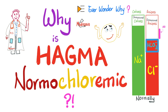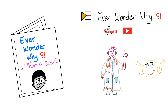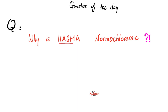In the previous video, we talked about why NAGMA is hyperchloremic. But today, why is HAGMA normochloremic? The name of the playlist is inspired by this book. First of all, what is HAGMA? HAGMA is a high anion gap metabolic acidosis. And what does normochloremic mean? Normal level of chloride in your blood.